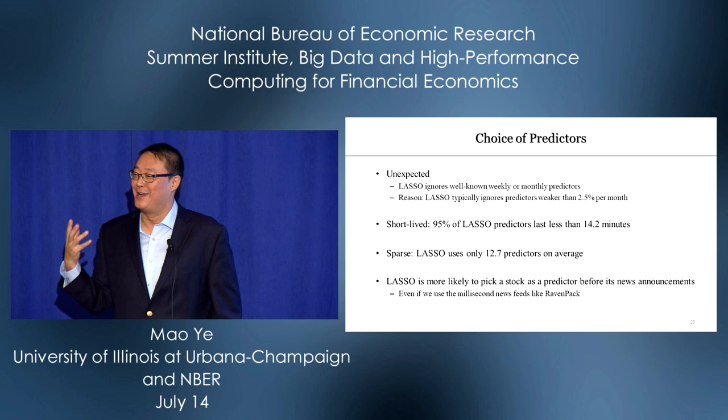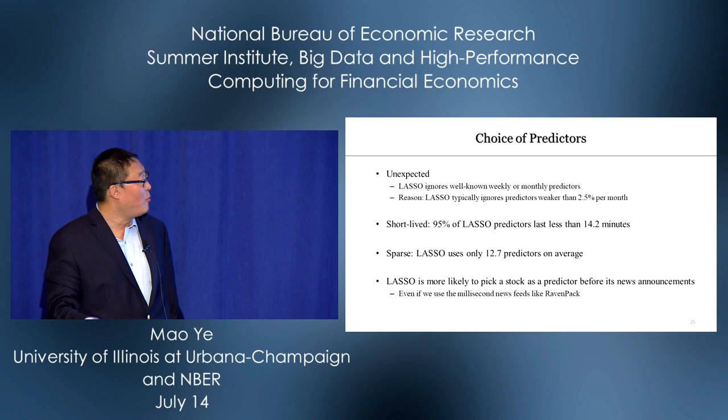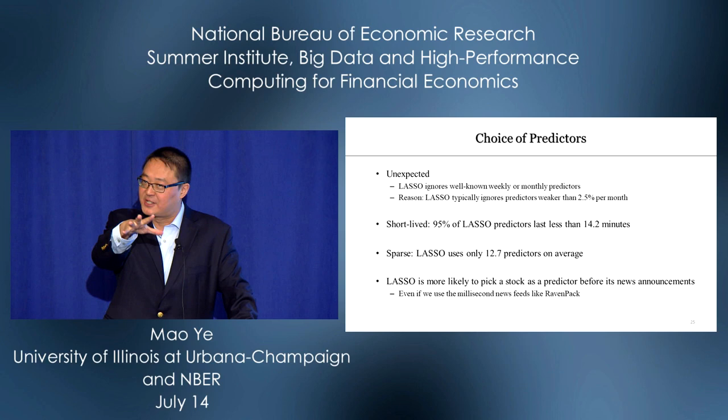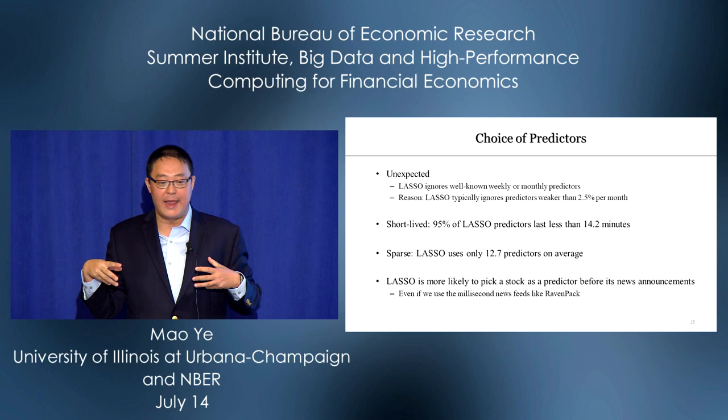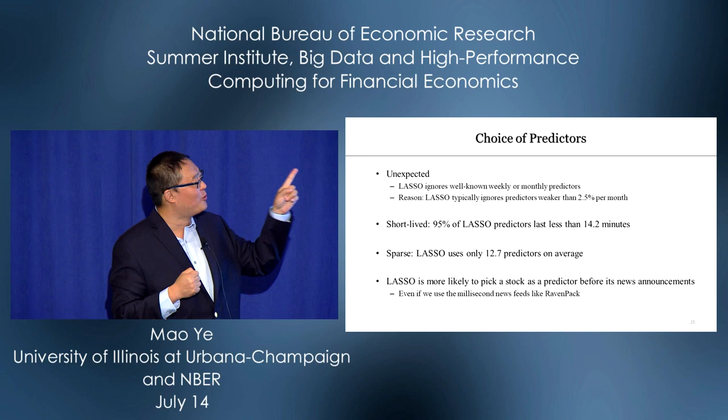We're academics, so we try to find economic interpretations. Alex, Adam, and I established four results. First — unexpectedly — the well-known factor that large stocks predict small stocks at weekly or monthly horizons does not work well at short horizons. Why? Related to lambda: LASSO typically ignores any predictor weaker than 2.5 per month. So many weekly or monthly predictors cannot generate this high return.